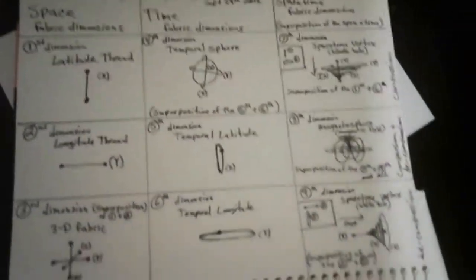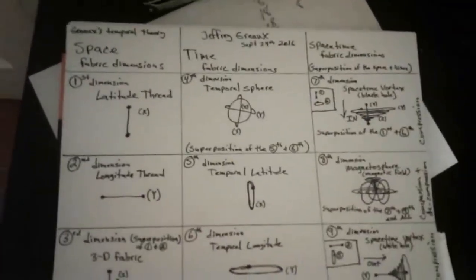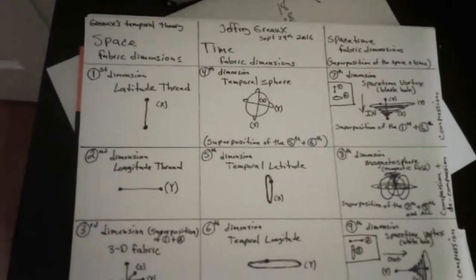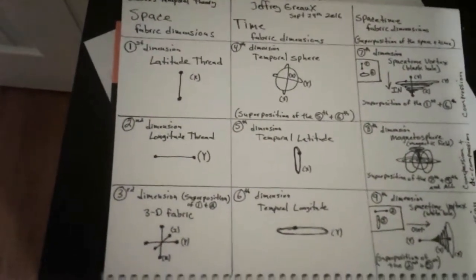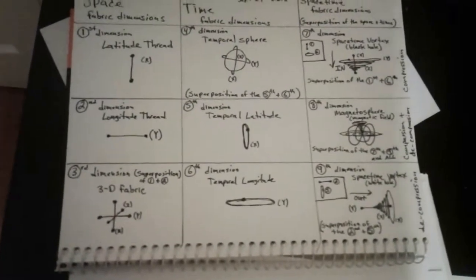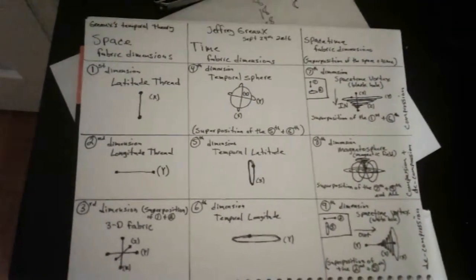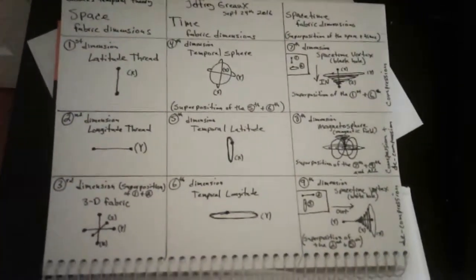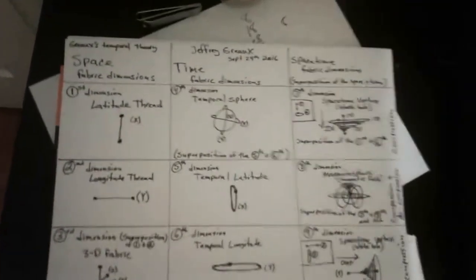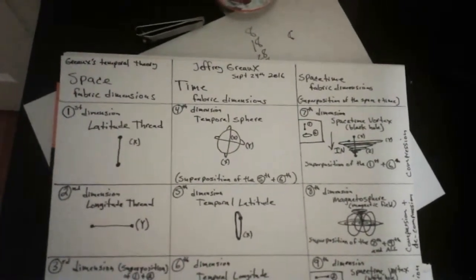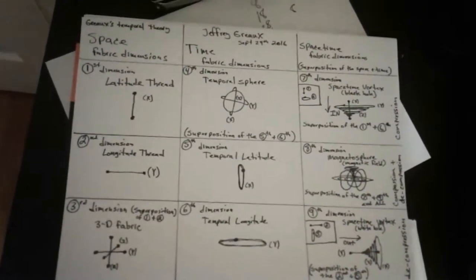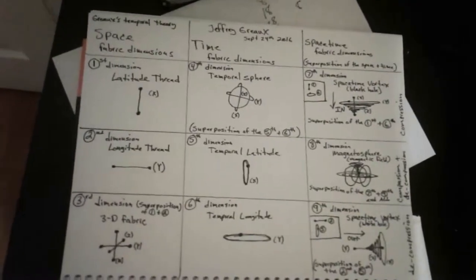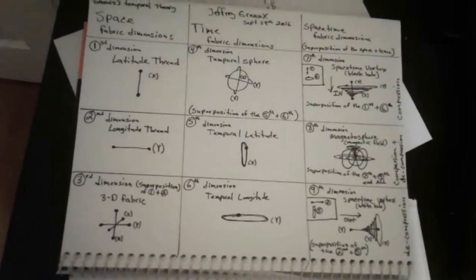Because you're adding time and doing it at the same time, you can't have latitude and temporal latitude at the same time — they're both the same thing. And you can't have longitude and temporal longitude at the same time. But you can have longitude and temporal latitude at the same time, and you can have latitude and temporal longitude at the same time. But you can't have three-dimensional space and a temporal sphere at the same time.